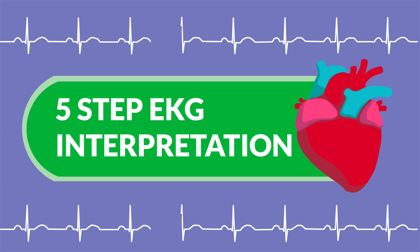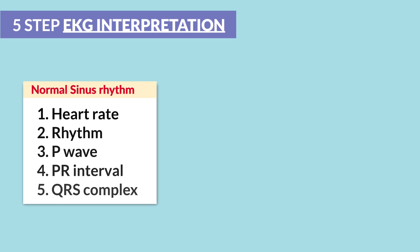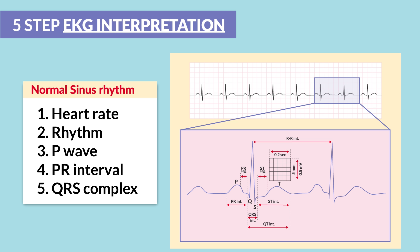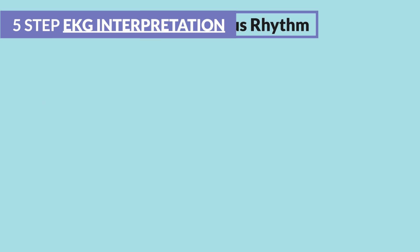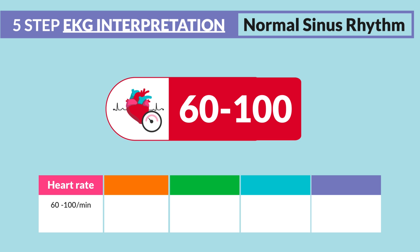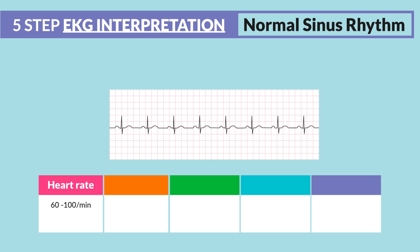For the five-step EKG interpretation, use these five steps to interpret any rhythm in 15 seconds or less. Step number one is all about the rate — between 60 to 100 is normal sinus rhythm. Simply count the R peaks.